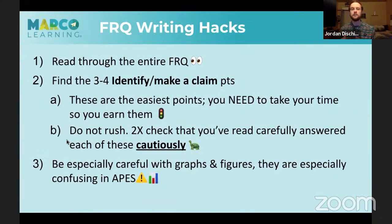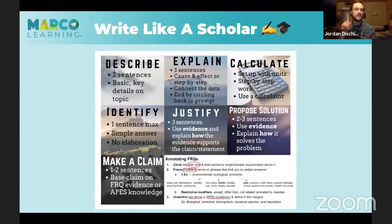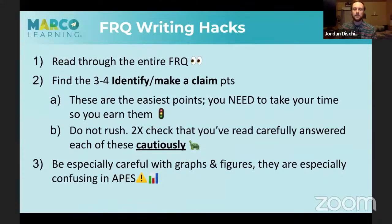Now let's talk about the hacks — working smarter rather than working harder. On each FRQ there will be 10 points. The first step before you dive in is to read through the entire thing once. Not all 10 points are created equal — some are much easier to earn than others. Look for the three to four 'identify' or 'make a claim' points. Identify means one sentence max, simple answer, no elaboration. Make a claim is one or two sentences, basing your claim on FRQ knowledge or evidence from a graph or figure.